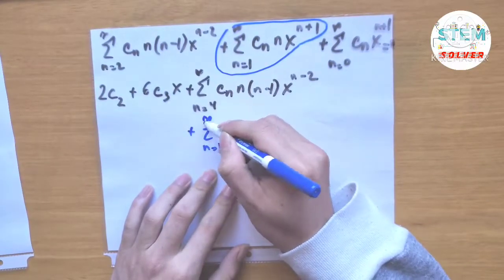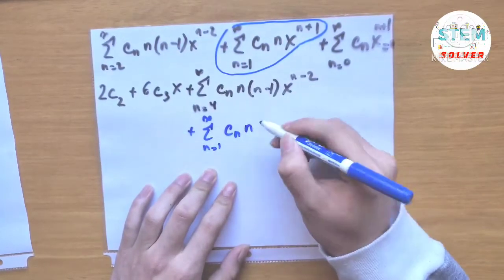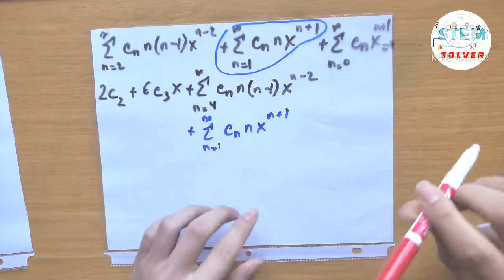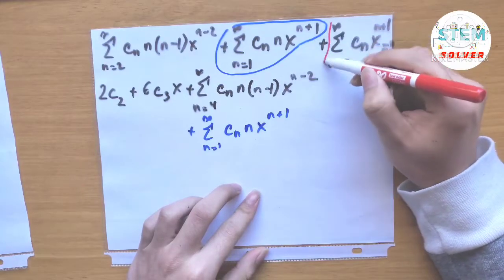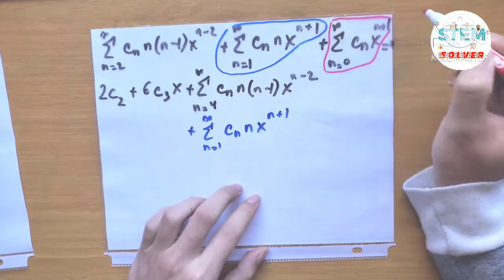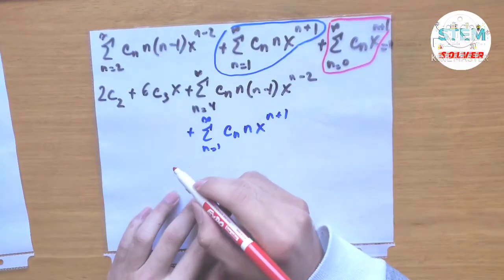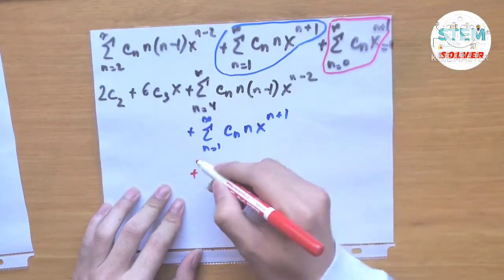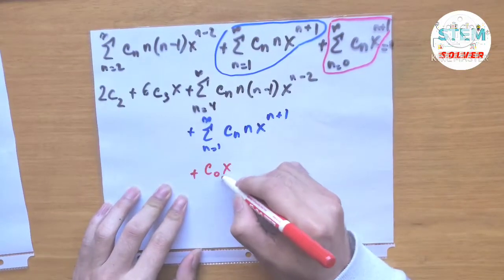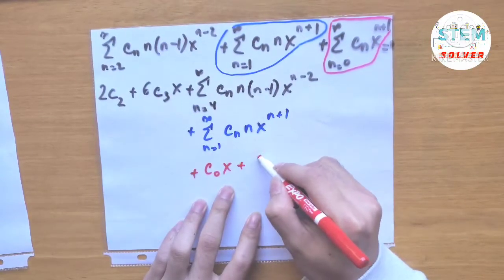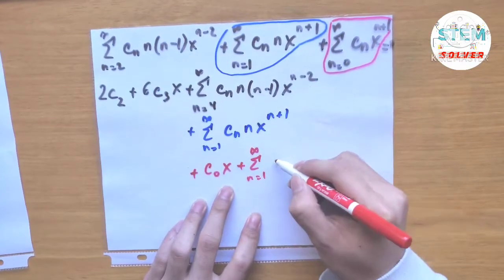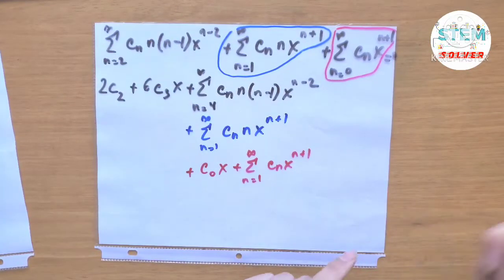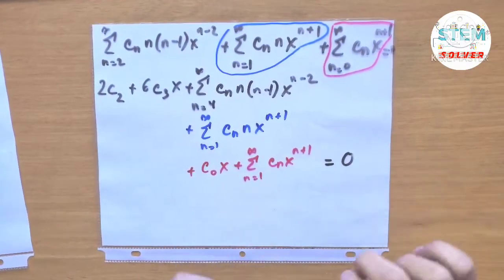For the last series (x times y), pulling out the n equals 0 term gives c_0 times x, with the rest running from n equals 1 to infinity of c_n times x to the n plus 1. The middle series (x squared times y prime) is just rewritten as the sum from 1 to infinity of c_n times n times x to the n plus 1. All of this equals 0.